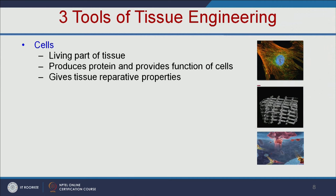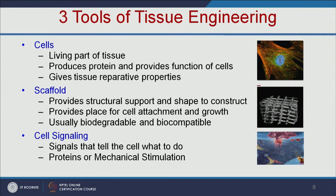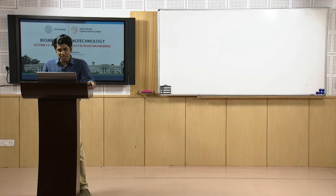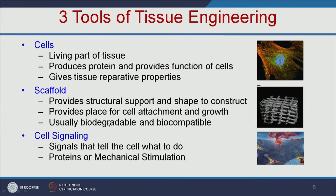The tools required for tissue engineering are cells, scaffold, and cell signaling. Cells are the living part of tissue — they produce proteins and provide cellular functions. The scaffold provides structural support and shape, and it should be biodegradable and biocompatible. Biocompatible means it should be compatible with the biological system; biodegradable means it should not induce any immune response or toxic effects when it degrades.